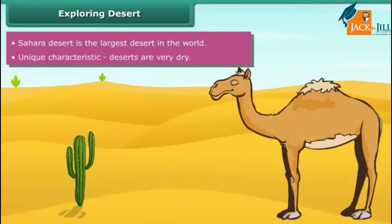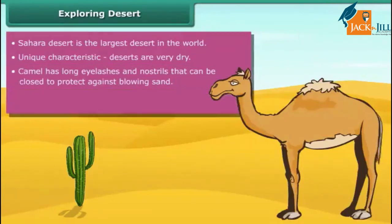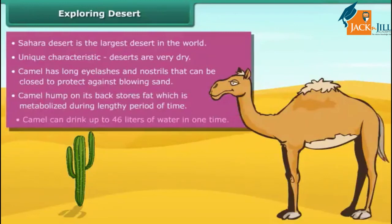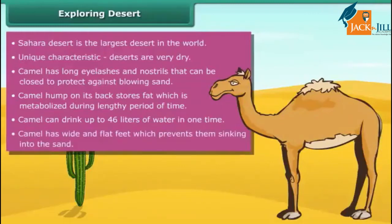The camel has many adaptations specifically suited to desert habitat. It has long eyelashes and nostrils that close to protect against blowing sand. A large hump on its back stores fat, which is metabolized during lengthy periods. Camels can drink up to 46 liters of water at one time and can live without water for a week. Wide and flat feet prevent the camel from sinking into the sand.